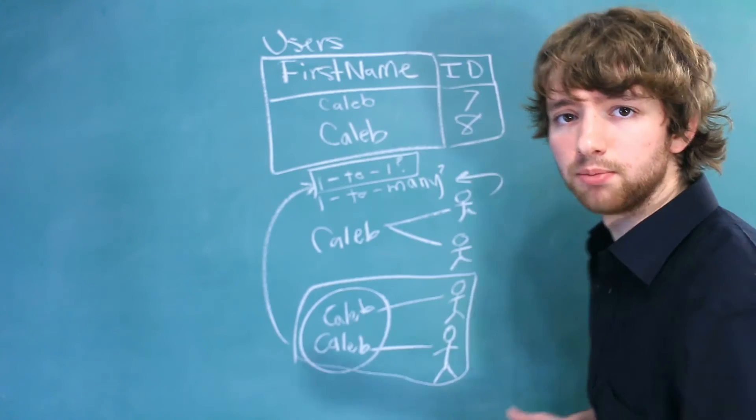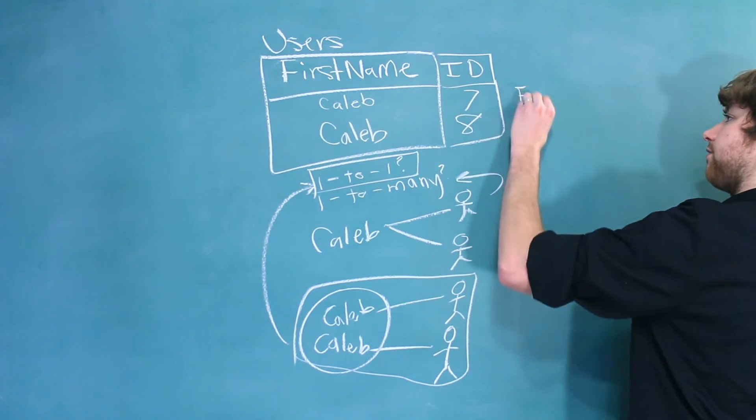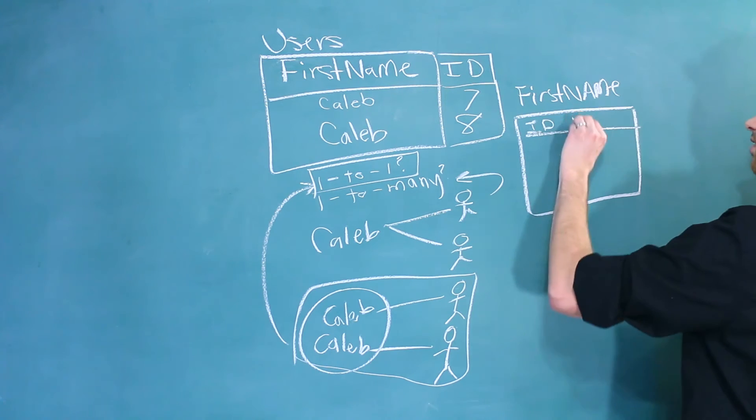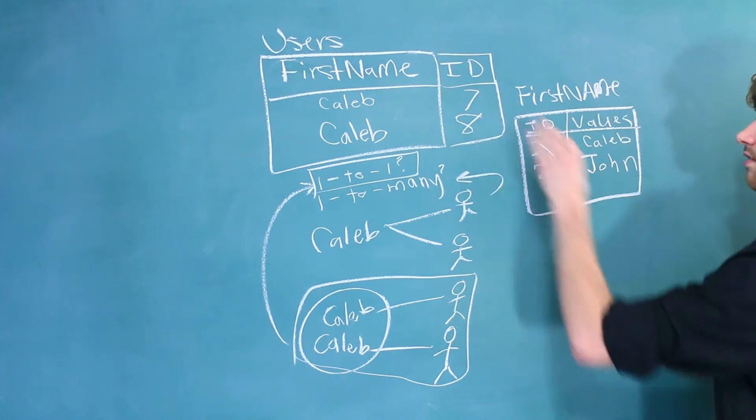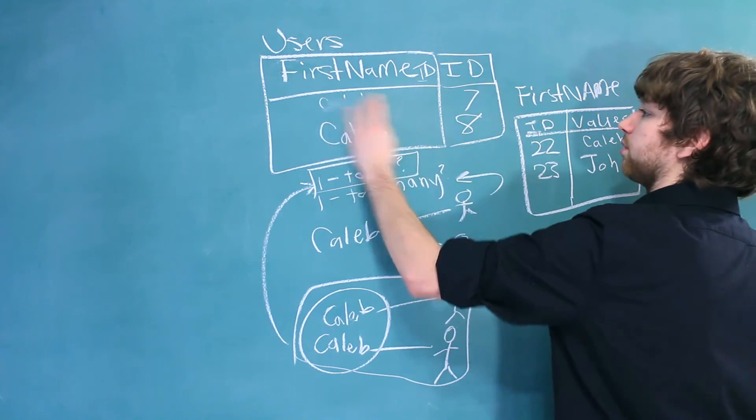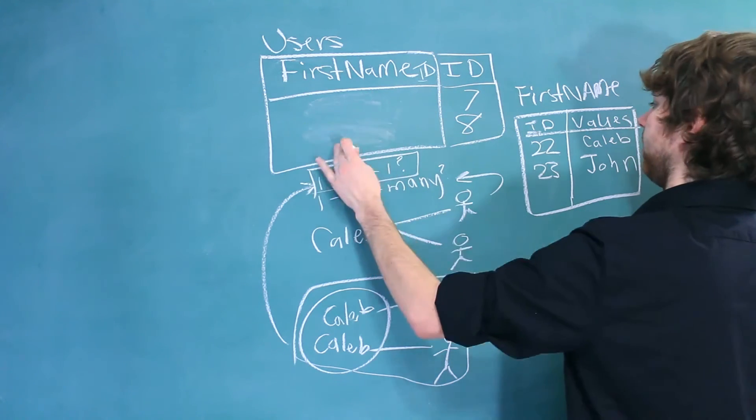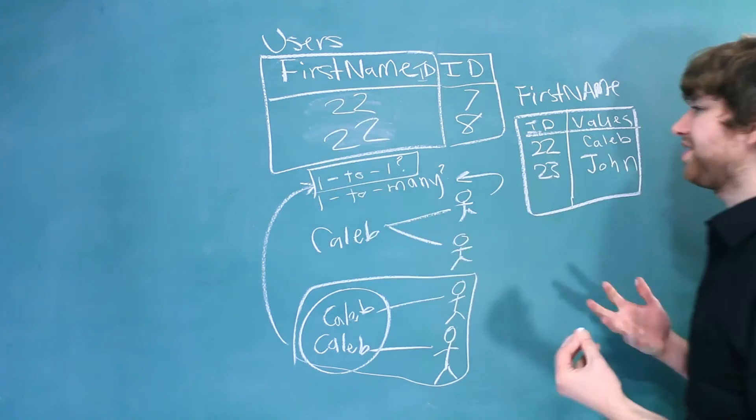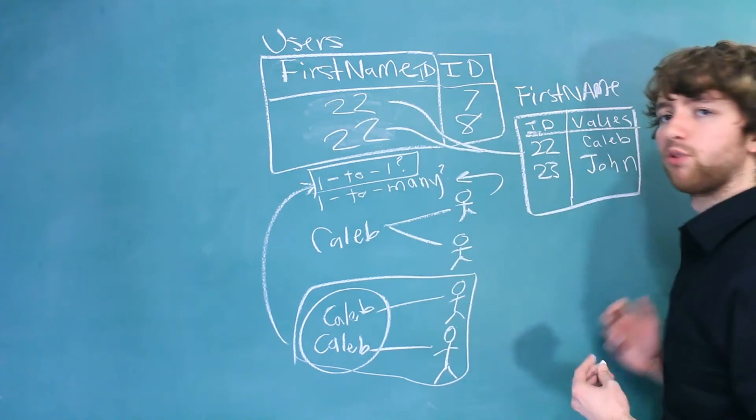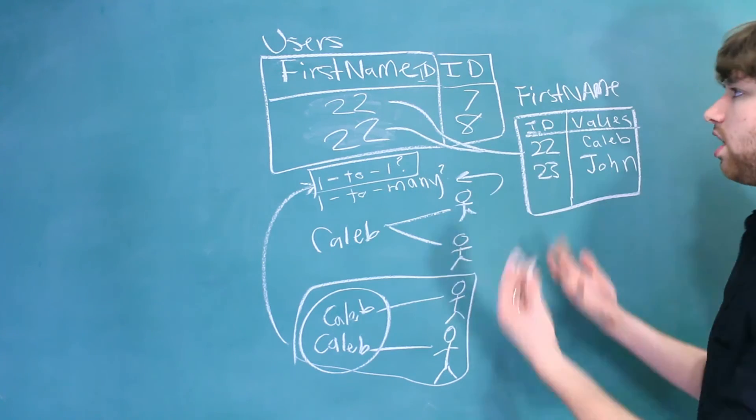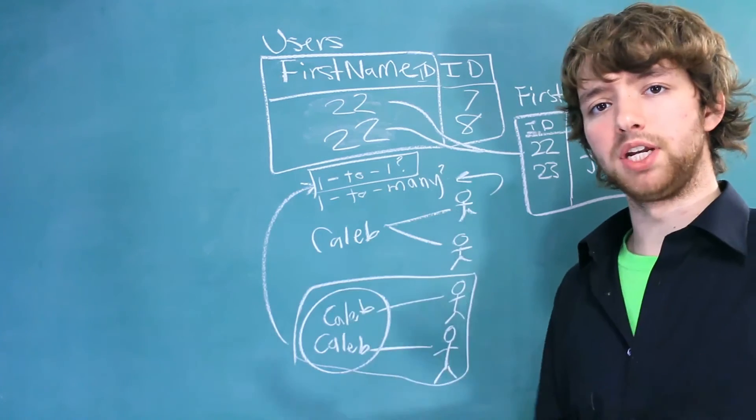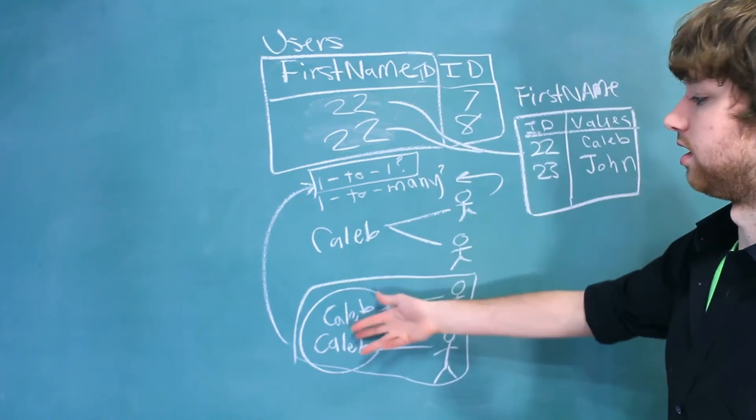Well, we would actually need a names table. So we would have something like first name, and inside of this table, we'd have IDs and values. And then inside of this table, instead of having the first name, we'd have the first name ID, and we would replace Caleb with 22. But this is just a really bad design. Even though it's connected all nice with foreign keys, it's just dumb because we're only going to have such a small minimal amount of repeating data if we have redundant data like this.